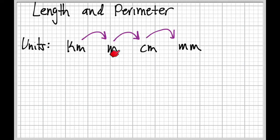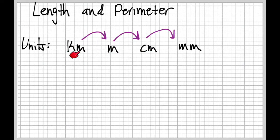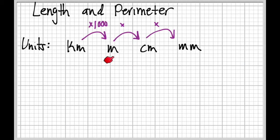Now since there are many meters in a kilometer, that number's going to go up. One kilometer is a thousand meters, so when we go in this direction, our number's going to get bigger and we're going to be multiplying. Whatever number we had for kilometers, we multiply it to get the number of meters. There are a thousand meters in a kilometer, so we multiply by 1,000. There are 100 centimeters in a meter, so we multiply by 100. And there are 10 millimeters in every centimeter, so we multiply by 10.